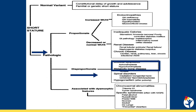Short stature comes in many forms. There are normal variants such as familial short stature or constitutional growth delay. There are other forms of proportionate short stature, including those associated with syndromes, congenital heart disease, inadequate calorie intake, or endocrinopathies. Skeletal dysplasias are uniquely disproportionate in their nature.